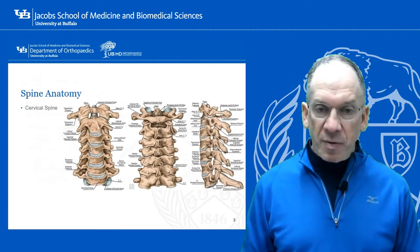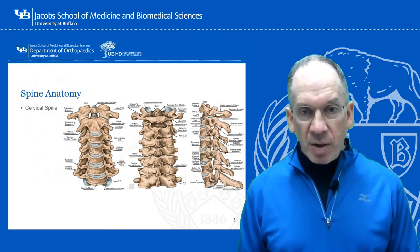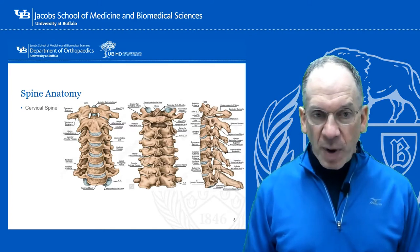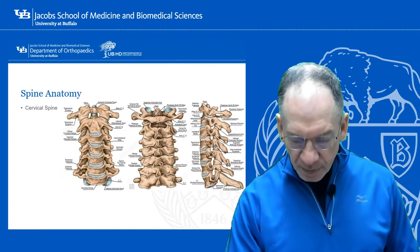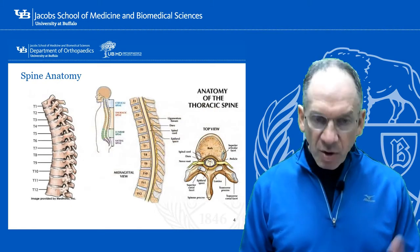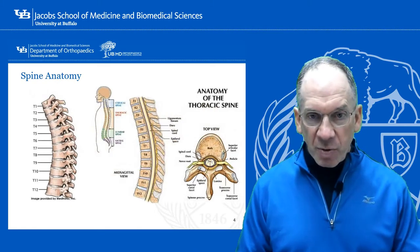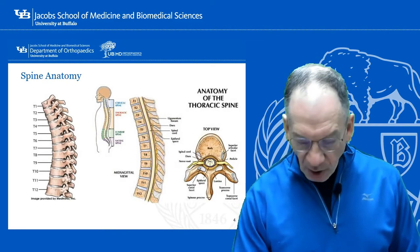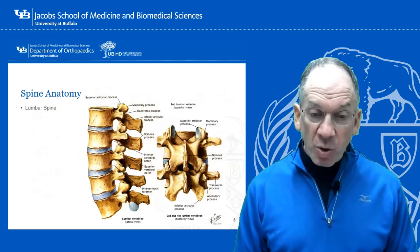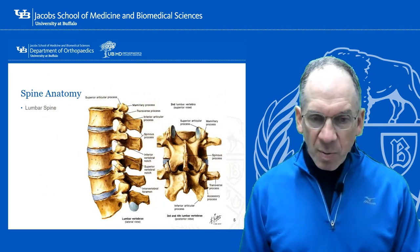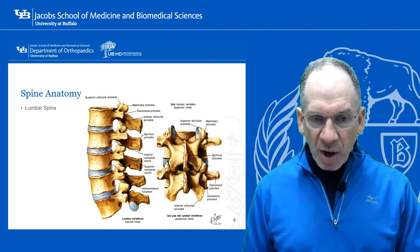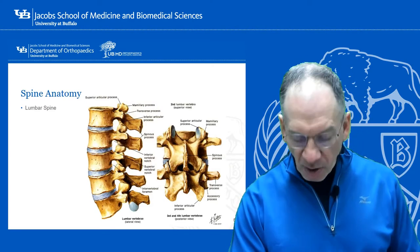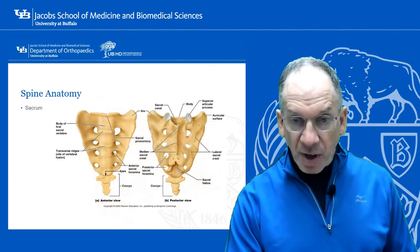Quick review of anatomy. Cervical spine: seven vertebrae. The top of the spine is more about rotation and the lower part of the cervical spine is more about extension and flexion. Thoracic spine: 12 vertebrae. Because of the rib cage being attached to it, it's pretty stable — not a lot of motion. The lumbar spine: five vertebrae, though some people can have six depending on their lumbosacral junction. Mostly flexion and extension through the lumbar spine. And then lastly, the sacrum.